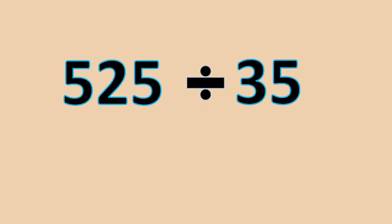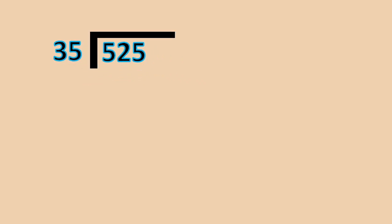Another example: 525 divided by 35. First, write the problem using a long division symbol like this. Next, take the first digit of the dividend, which is 5. Since 5 is smaller than the divisor 35, we cannot divide it. Therefore, we have to take the following digit of the dividend, which is 2. So it becomes 52.